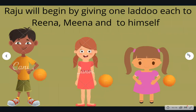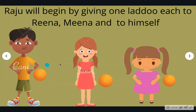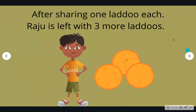First, Raju will begin by giving one laddu each to Reena, Meena and to himself. Usne apne aap ko ek diya, Meena ko ek diya, aur Reena ko ek diya. After giving one laddu each, Raju was left with three more laddus. Chai mein se usne ek ek sab ko baat diya, phir akhir mein uske paas teen aur bache.